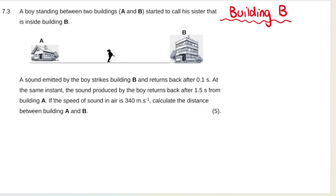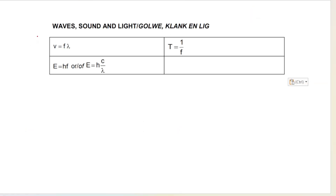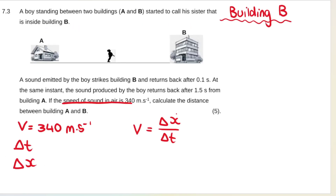If we know the speed of sound - 340 meters per second - and we know the time, we can work out distance using the formula: speed equals distance divided by time. Note that this formula is not given on your formula sheet, so you need to know it. It's also taught when dealing with displacement, speed, distance, and time in a later chapter.